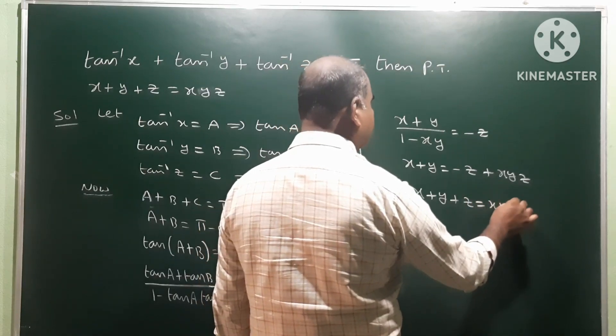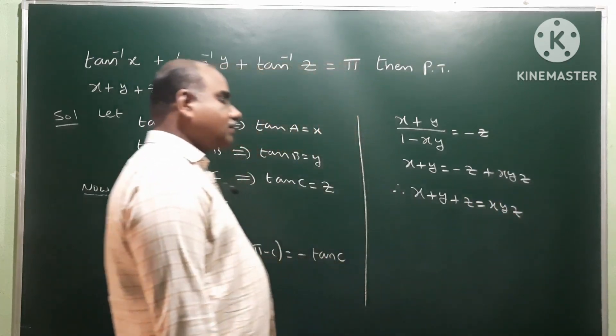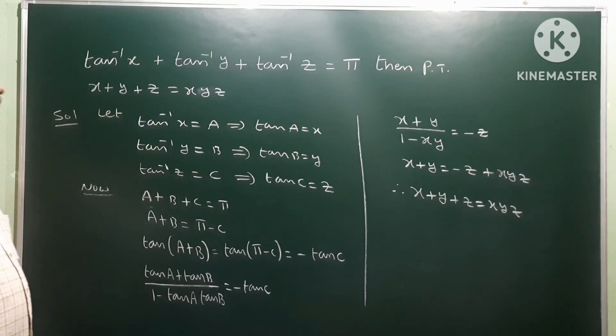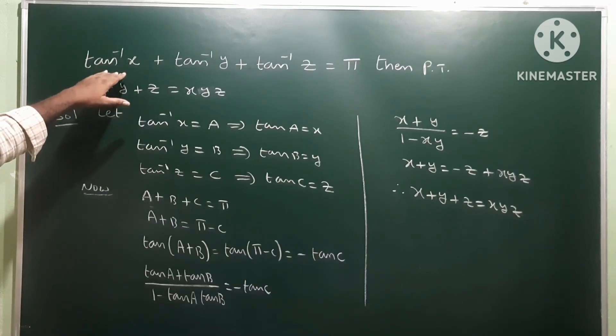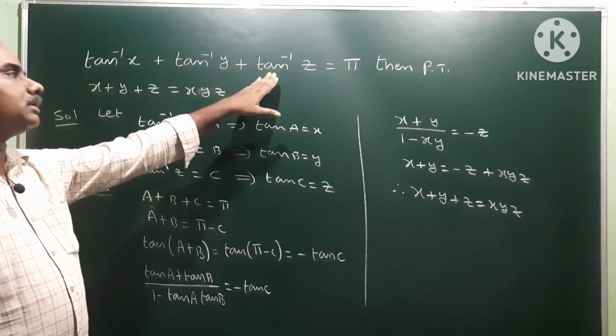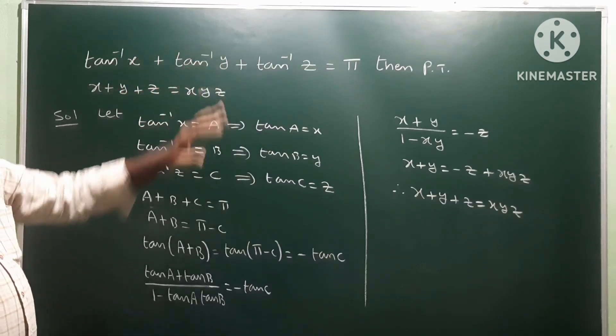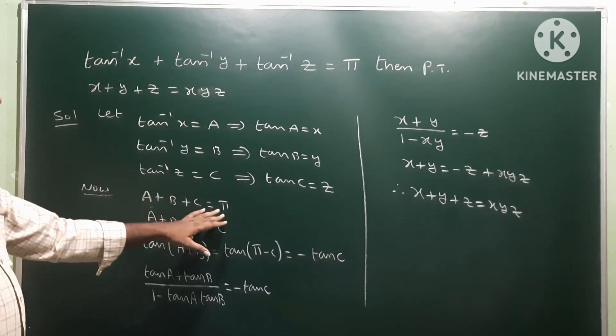So that is the result. So take these as A, B, C, then we have A plus B plus C.